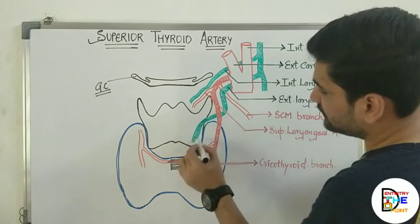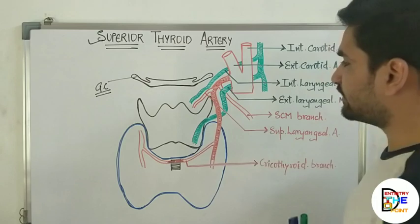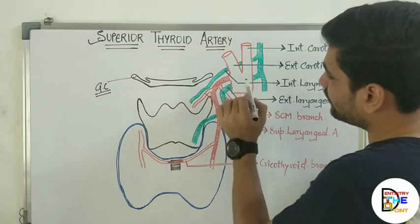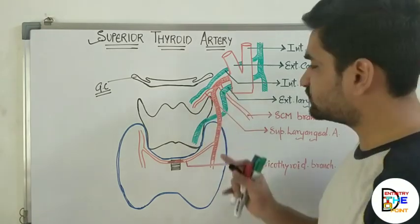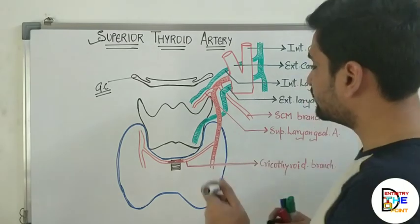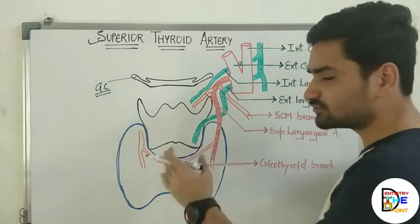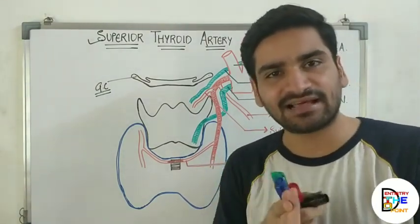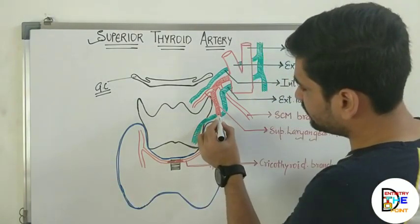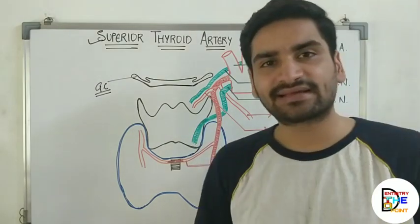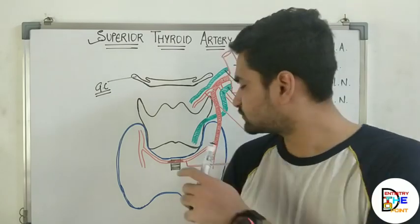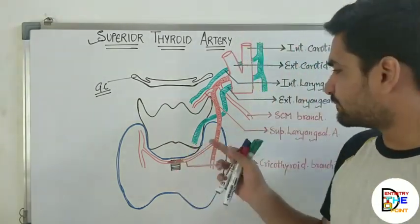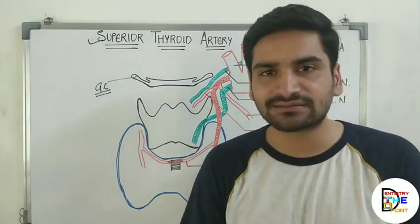The superior thyroid artery is going to run parallel to the external laryngeal nerve. The relationship of the external laryngeal nerve with the superior thyroid artery is very important — they run parallel together. However, just before reaching the upper lobe of the thyroid gland, the external laryngeal nerve is going to deviate from the superior thyroid artery. It will deviate medially and continue its own course, while the superior thyroid artery continues forward toward the thyroid gland.